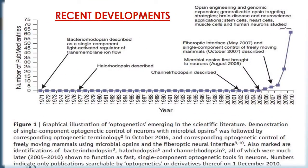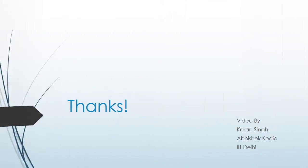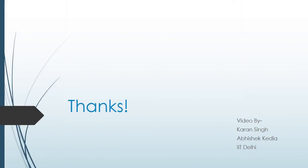Optogenetics has been a very hot topic of research in recent years. In 2010, optogenetics was chosen as the method of the year across all fields of science and engineering by the journal Nature. At the same time, optogenetics was highlighted in the article on breakthroughs of the decade in the journal Science. Thank you.